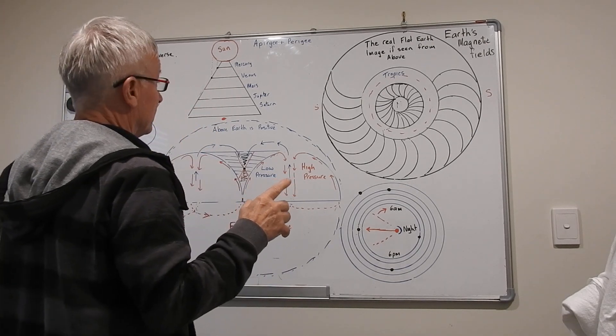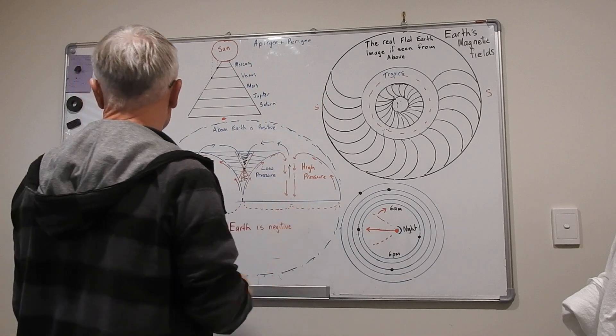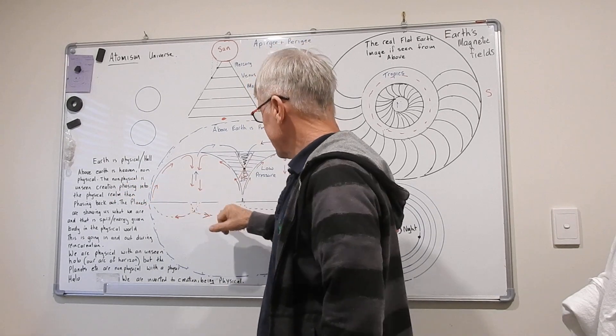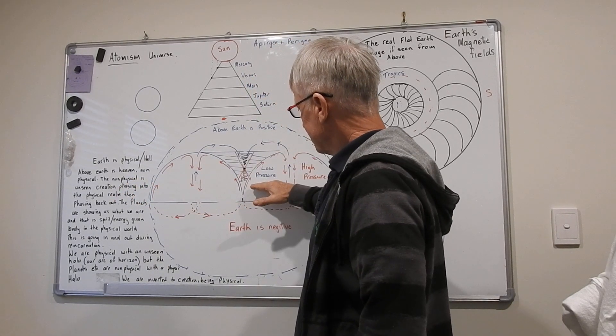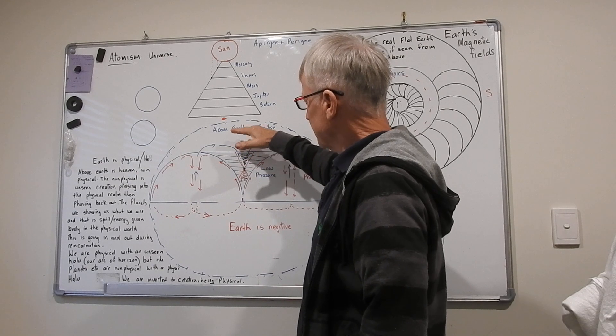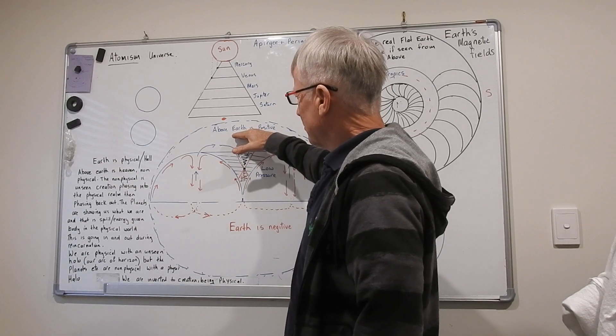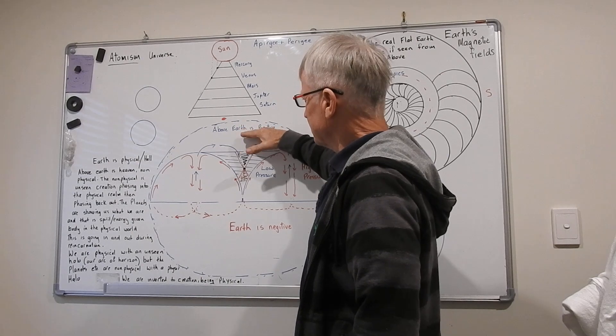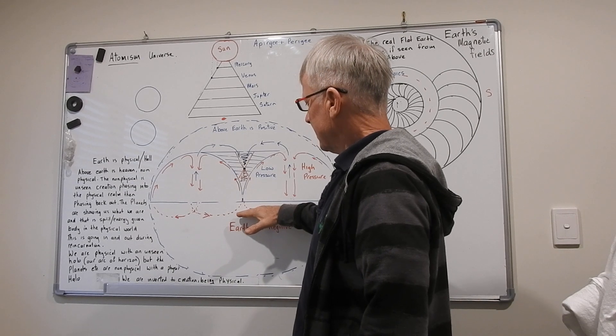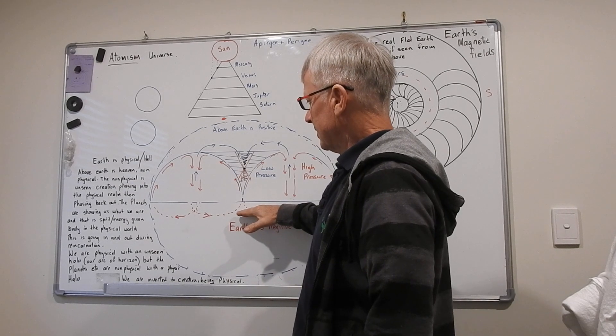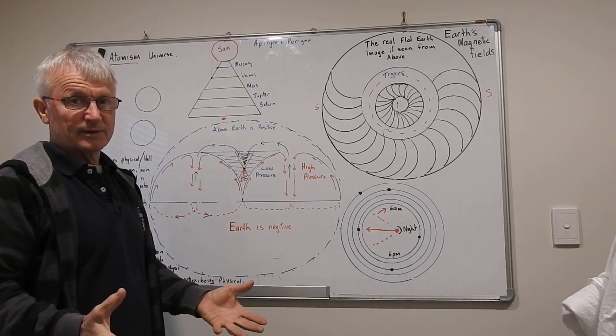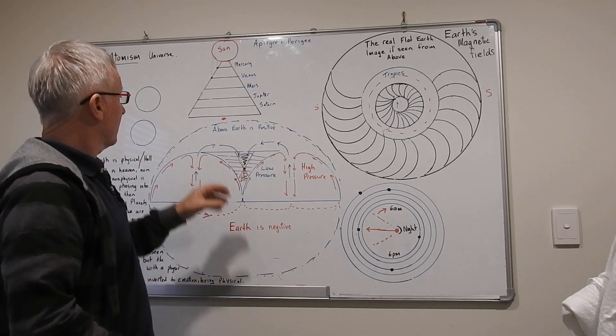Now understanding the planets, we have to understand all this if you want to understand flat earth. You've got to understand what's really happening down here in the physical world. That's one half. There's two halves to everything, two sides to a coin. You've got a physical world down here and non-physical up here. So what we have is a non-physical forming a physical skin down here. We are physical having a non-physical halo.